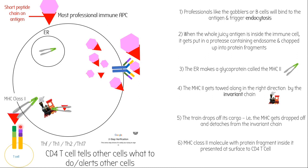The different types of CD4 T-cells that can be recruited are particular helper cells: Th1 cells, Th2 cells, and Th17 cells. We'll talk about those in a different video.